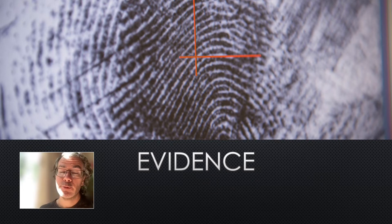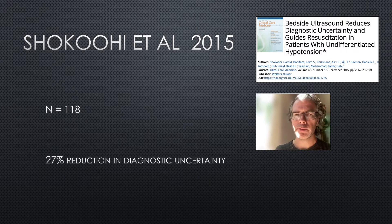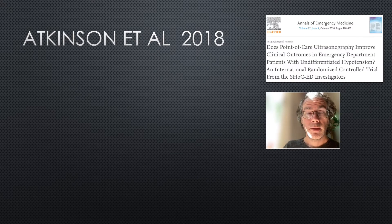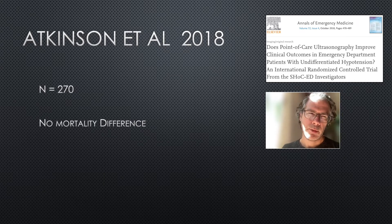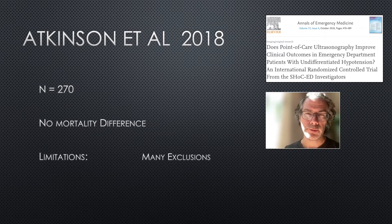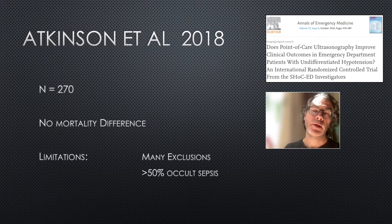A brief review of the evidence for using POCUS in shock. A 2015 paper showed a modest reduction in diagnostic uncertainty. In 2018 a larger North American paper tried to show a mortality benefit and was a negative study — no statistically significant mortality difference. However, the ethics committee insisted on many exclusions, basically the patients where POCUS is known to be most useful, and over half the patients ended up having occult sepsis, where POCUS is probably least useful. So whether there could be a mortality difference in select patients remains unclear.